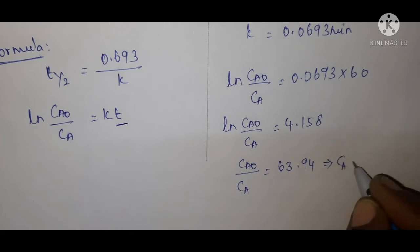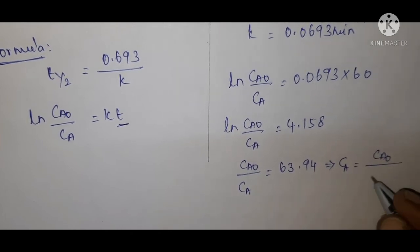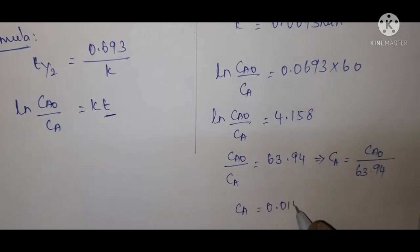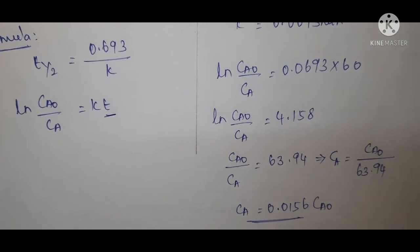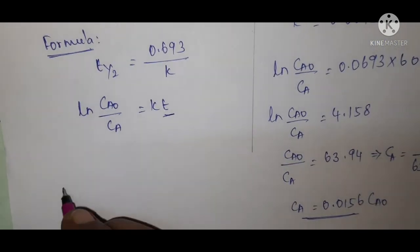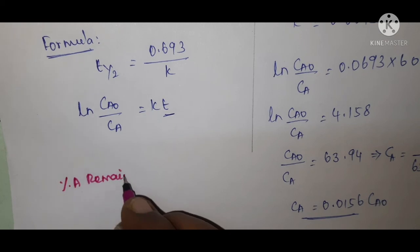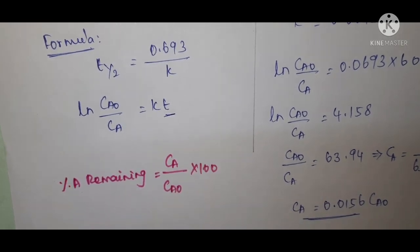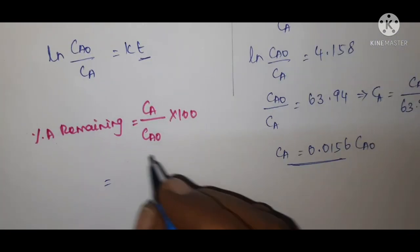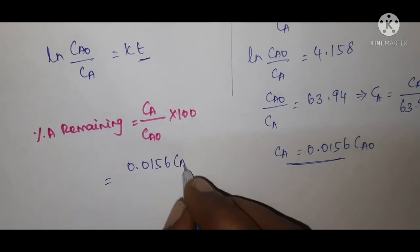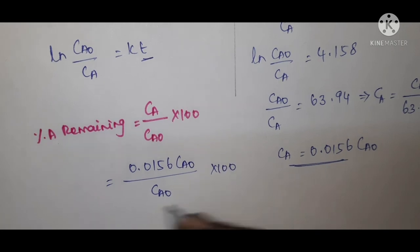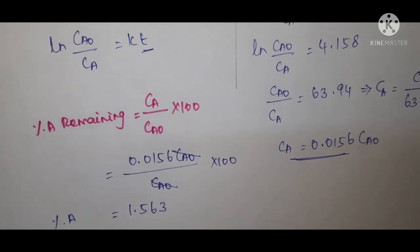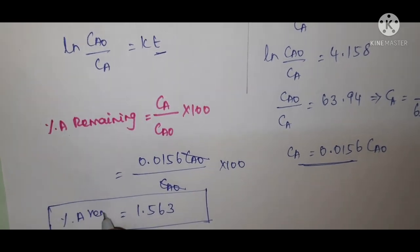From Ca0/Ca equals 63.94, we get Ca equals Ca0 divided by 63.94. The percentage of A remaining equals (Ca/Ca0) times 100. Since Ca/Ca0 equals 1/63.94, which is 0.01564, the percentage A remaining is approximately 1.563%. This is the percentage of A remaining after 60 minutes.